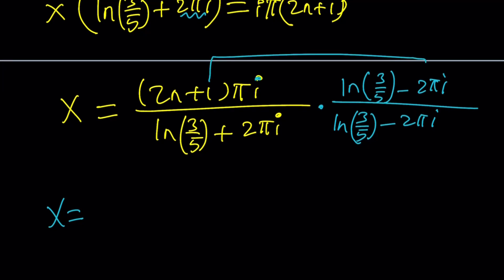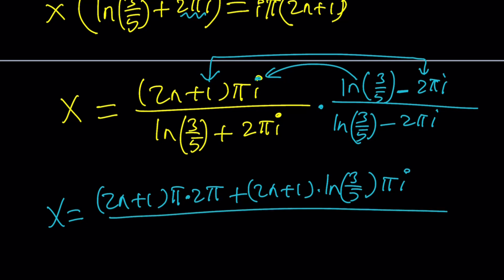When imaginary numbers are multiplied like these two, i squared is going to give you negative 1. And so, that's going to be the real part. The new real part is going to look like this. We're going to have a plus sign, because the minus sign will be negated. And that's going to give us 2n plus 1 pi times 2 pi. And then, we're going to multiply it by this, which is going to give us the imaginary part, which is 2n plus 1 times ln 3 over 5 times pi i. The whole thing is going to be divided by the sum of 2 squares. So, it's going to be ln 3 over 5 squared plus 4 pi squared.